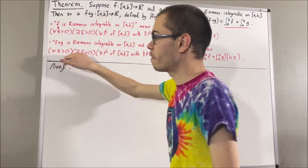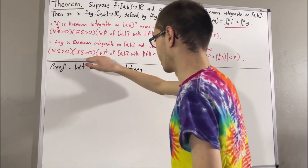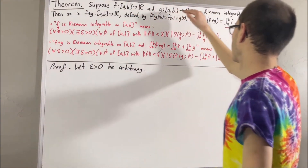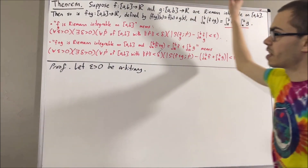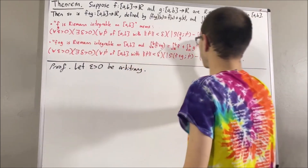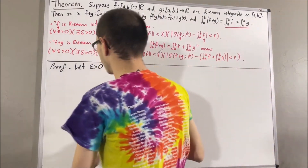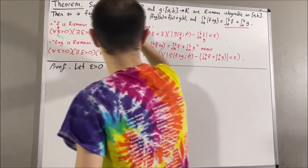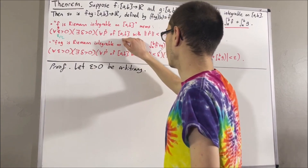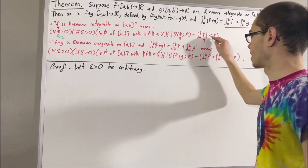We will use the fact that f and g are both Riemann integrable on [a, b]. Since f is Riemann integrable, the epsilon-delta statement holds for every positive real number — in particular for ε/2. So there exists a positive real number δ₁ such that for all tagged partitions of [a, b] whose norm is less than δ₁, the absolute value of the Riemann sum of f minus the integral of f is less than ε/2.